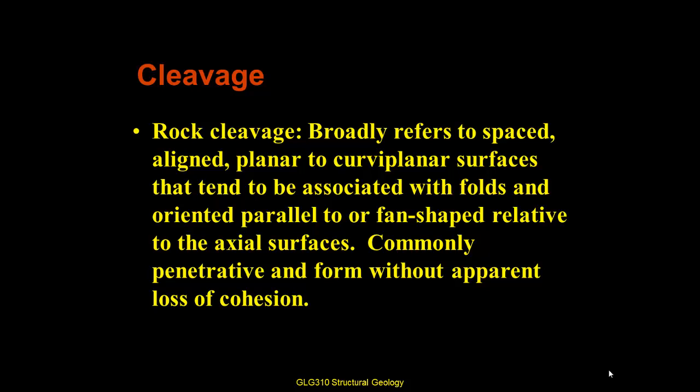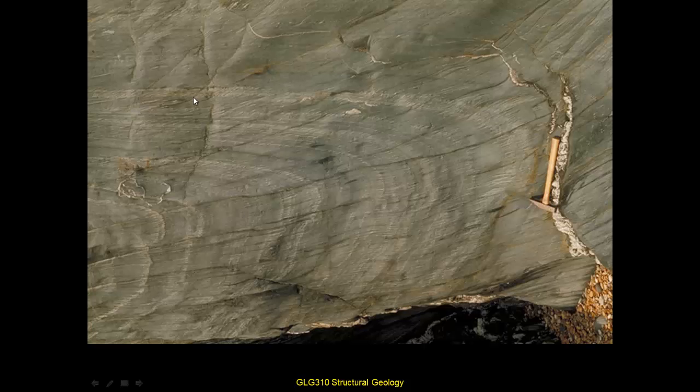When we talk about cleavage, we're not talking about mineral cleavage — how you can identify calcite or feldspar by its rectangular cleavage — but rather rock cleavage, which is a larger-scale feature. It broadly refers to spaced, aligned planar to curvy planar surfaces associated with folds, oriented parallel to or fan-shaped relative to the axial surfaces of folds, commonly penetrative and forming without apparent loss of cohesion. Penetrative means they go throughout the rock, and without apparent loss of cohesion means the rock remains continuous across them, though it would break or cleave when struck. An example shows color variation indicating bedding in a fold, with curvy planar rock cleavage cutting across it, developed during metamorphism.